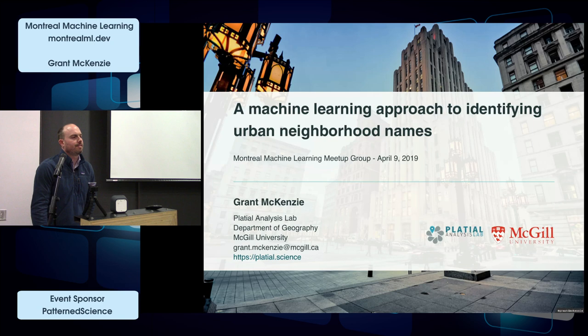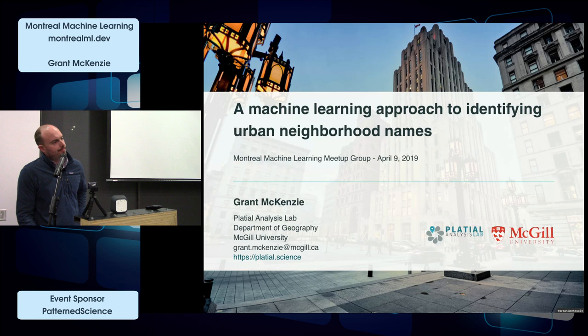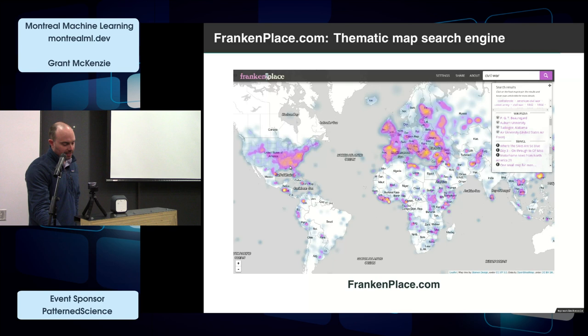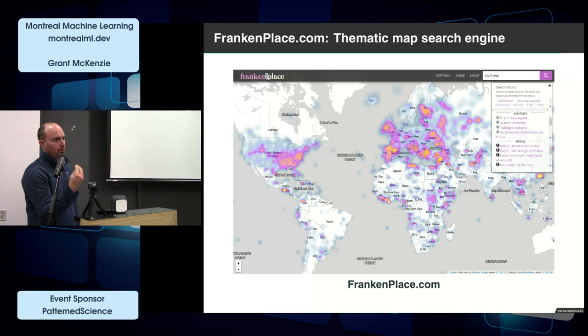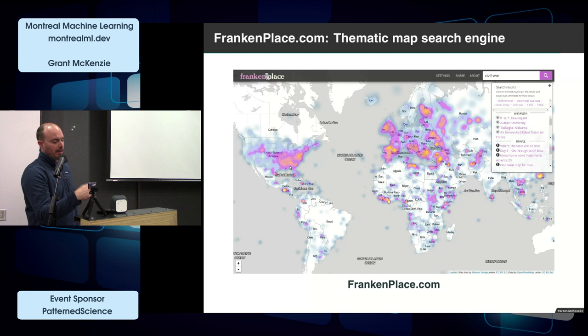Q: How does the FrankenPlace application relate to your neighborhood work? A: The link is that the spatial statistical techniques used were very similar — looking at clustering based on specific locations. FrankenPlace pulls in geotagged Wikipedia and travel blog content, analyzes co-occurrence of terms and n-grams within that Wikipedia data, and as you search for something, it clusters those and maps them as a kernel density heat map. The tie between them is loose — basically based on spatial signatures we see in the data.